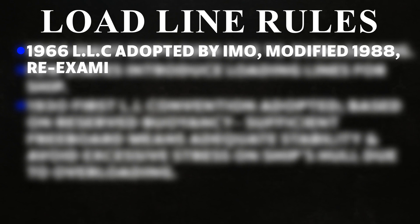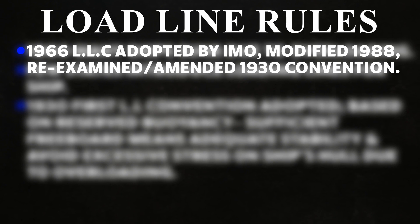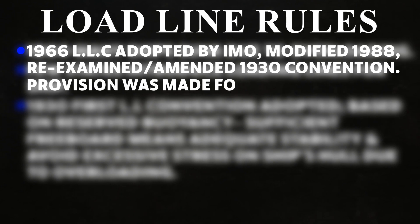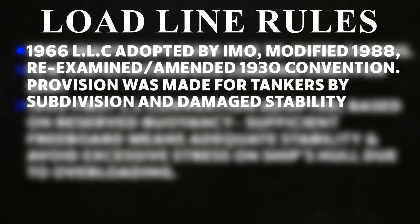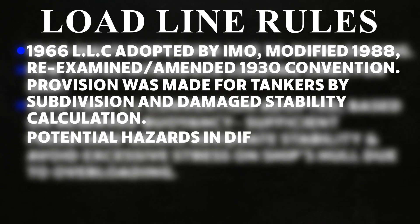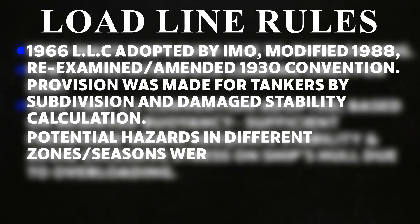The 1966 Load Line Convention was adopted by IMO, modified in 1988, re-examining and amending the 1930 Convention. Provision was made for tankers by subdivision and damage stability calculation; potential hazards in different zones and seasons were considered.